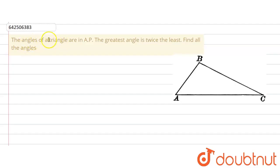The given question says that the angles of a triangle are in AP, that is arithmetic progression, and the greatest angle is twice the least. The question asks us to find all the angles.